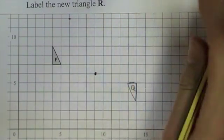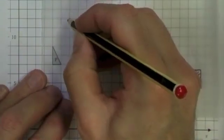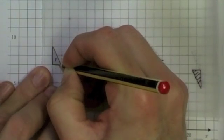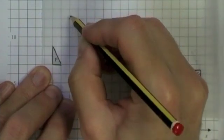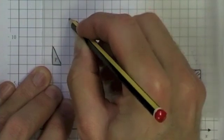And I must do 90 degrees anticlockwise, so tracing paper, draw around the triangle, press the pencil onto the center of rotation and 90 degrees anticlockwise.